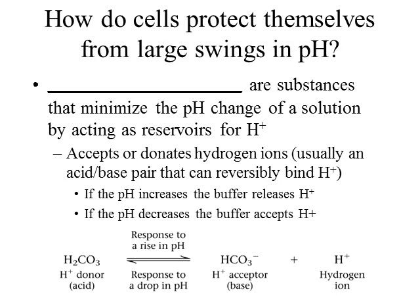Changes in hydroxide ions and hydrogen ions are very reactive in a cell, so the cell needs to protect itself from swings in pH — from becoming too acidic or too basic. Cells produce substances called buffers. Buffers minimize the pH change of a solution and act as reservoirs for hydrogen ions, meaning they can accept or release hydrogen ions depending on what is happening to the solution, in response to pH changes. Let's take a look at a simple buffer: carbonic acid. If there is a rise in pH — a decrease in hydrogen ions — carbonic acid can respond by releasing hydrogen ions into solution.